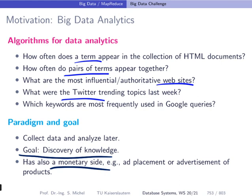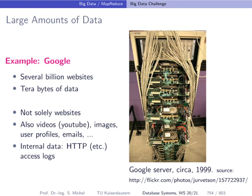People don't do this only because they're interested in insights — in many cases it should also lead to making money. For instance, Google, other search engines, and Twitter want to understand user interests in order to make smart ad placements and advertise products. When we talk about big data, we mean first of all large amounts of data. Google has several billion websites indexed, representing terabytes of data, plus YouTube videos, images, user profiles, Gmail, and a large amount of internal data such as HTTP server access logs for intrusion detection.